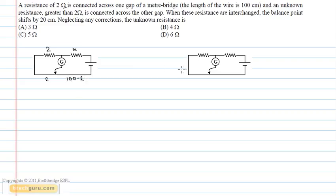As the balanced Wheatstone bridge is obtained, the ratio of the resistors is equal to the ratio of the lengths across them. Therefore, 2 upon R is equal to L upon 100-L.